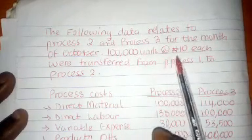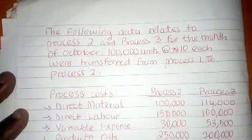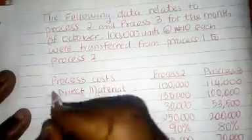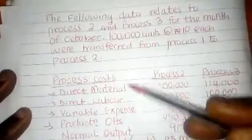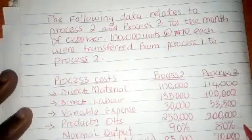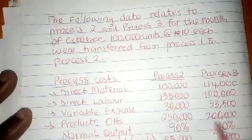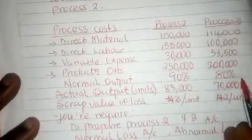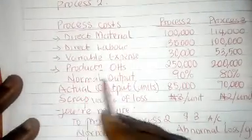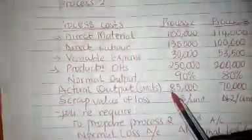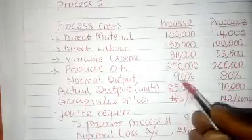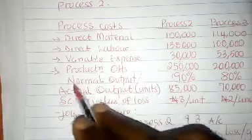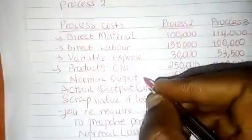100,000 units of 10 Naira each were transferred from process 1 to process 2. You have been given the process costs for process 2 and process 3, up to production overheads. This is normal output — that is the expected output — what management expects: 90% out of 100% input.